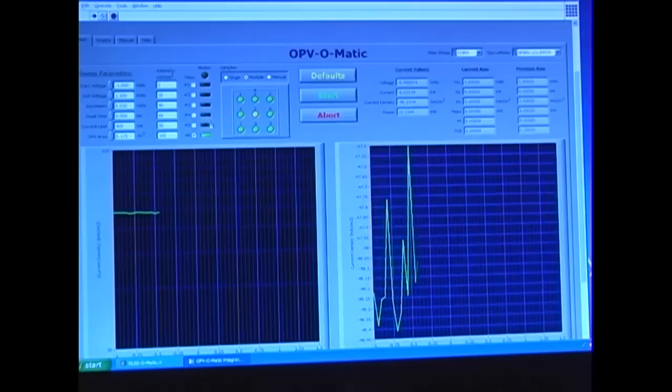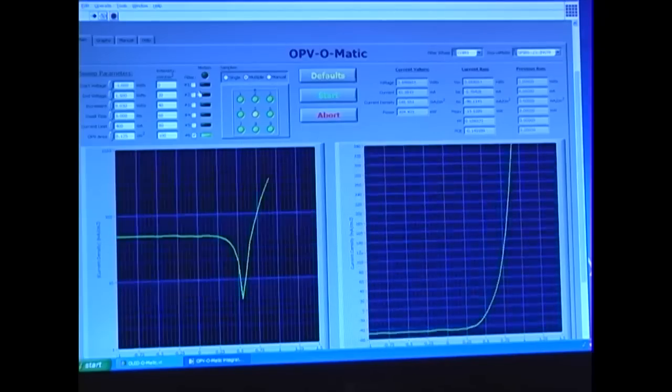The computer controls the light source and filter wheel so that a series of measurements at different current levels and color can be made. The computer builds a graph of current versus voltage.